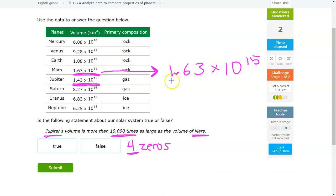then that means that the volume of Jupiter needs to be greater than this. And as we can see, 1.63 times 10 to the 15th is bigger than 1.43 times 10 to the 15th. So therefore, this question should be false.